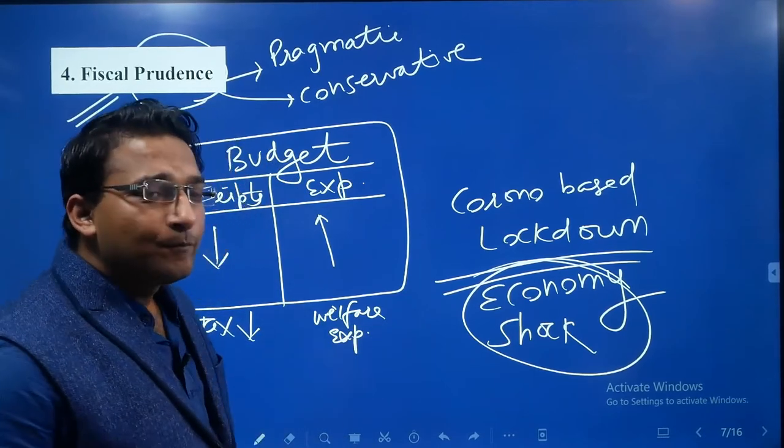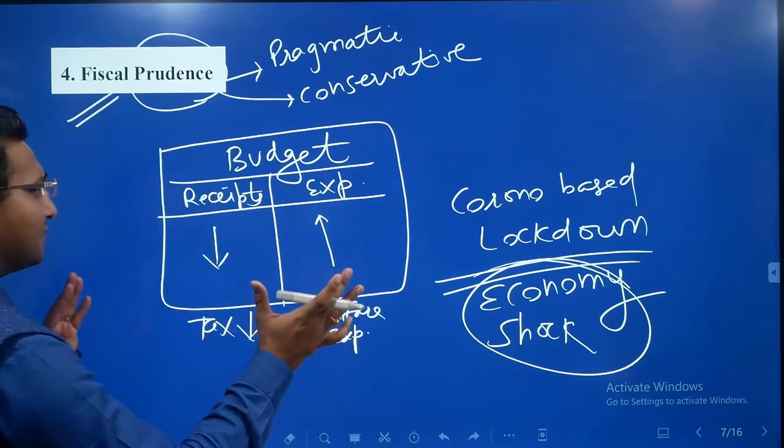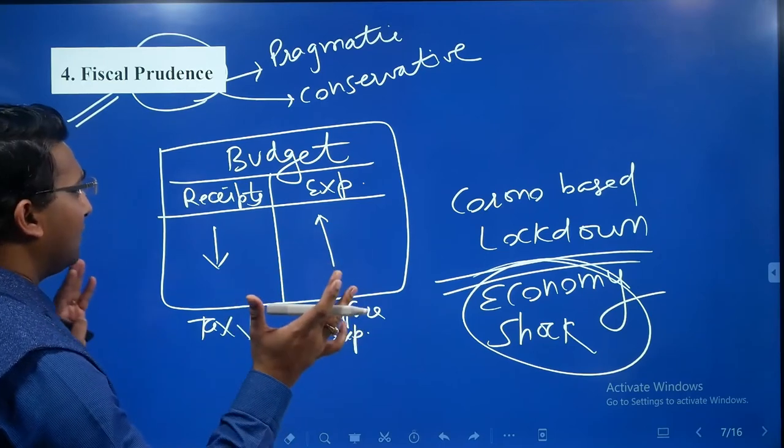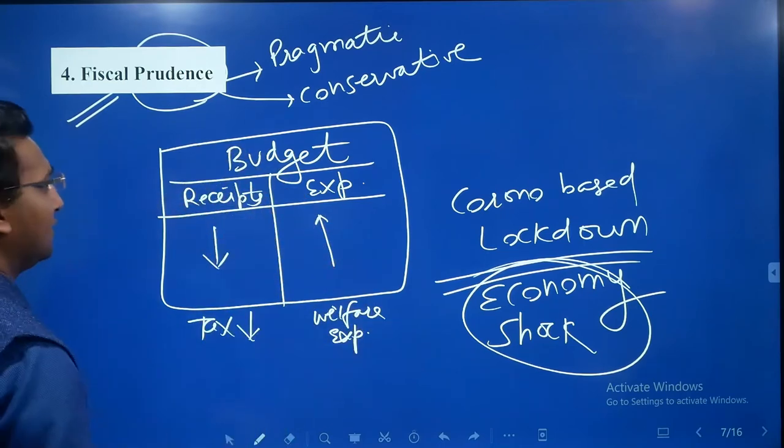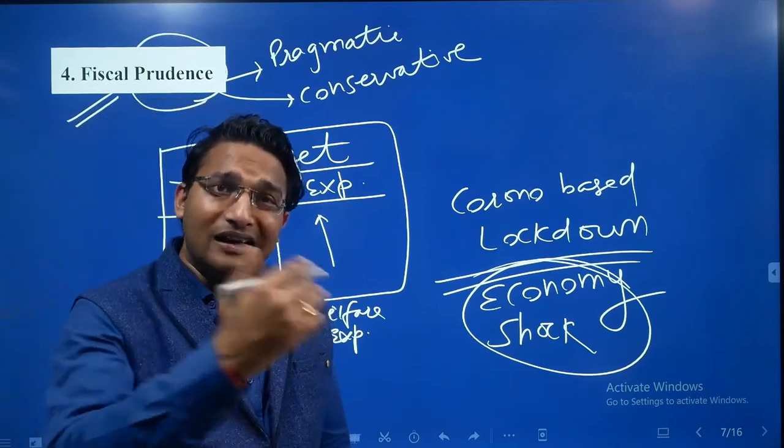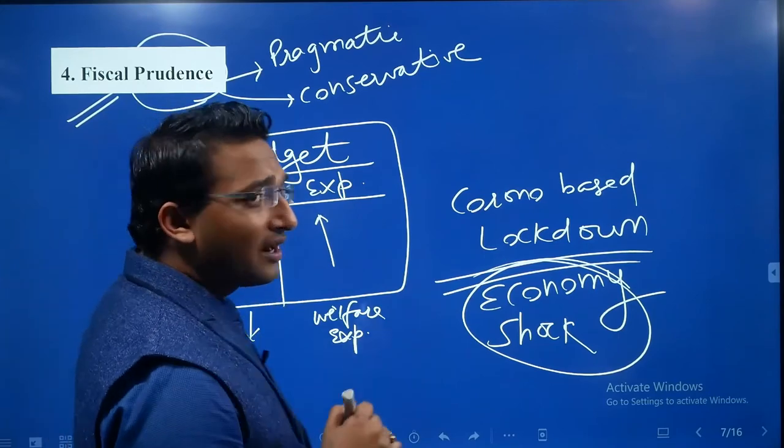So all of this—being pragmatic, being prudent—is fiscal prudence. Within this, the government can also go for cutting down government expenditure.